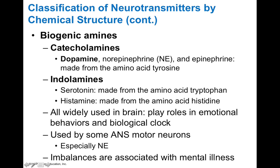These biogenic amines are widely used in your brain and play lots of different roles in things like movement, emotional behaviors, and even setting the biological clock. Histamine is a really important neurotransmitter involved with things like digestion and even inflammation. Some of these biogenic amines are used by your autonomic nervous system, and imbalances are associated with mental illness.